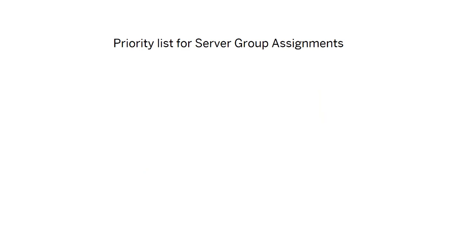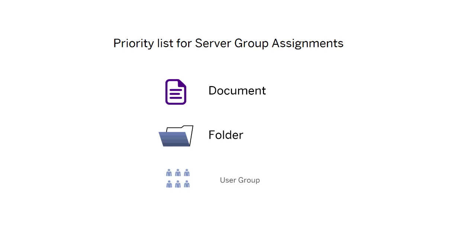Remember, the BOE prioritizes the server group assignment first at the document level and later at the folder and user group level. This implies that the server group assigned to a document is preferred over the server group assignments to a folder and user group.